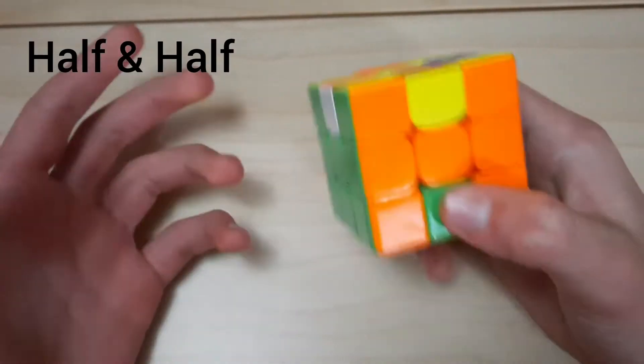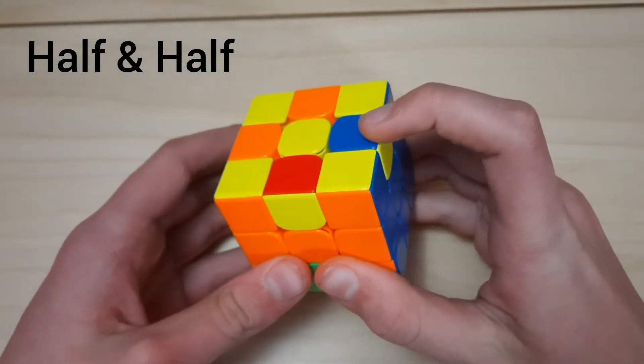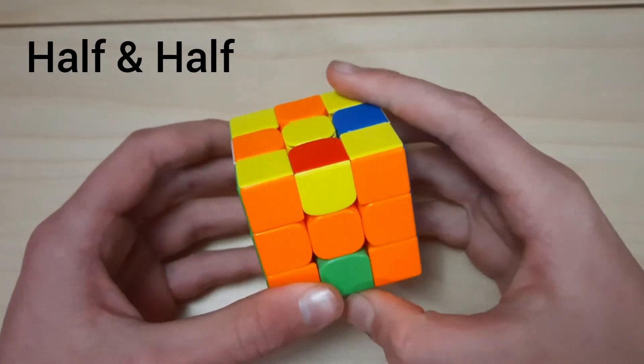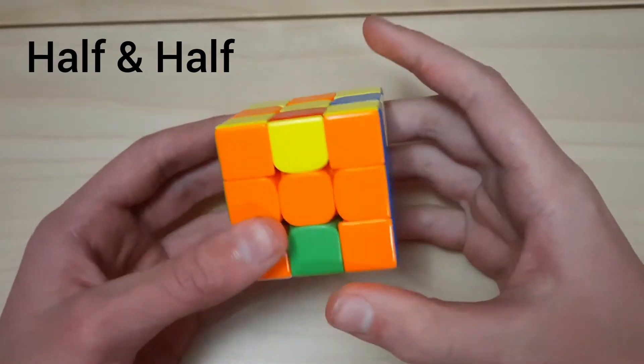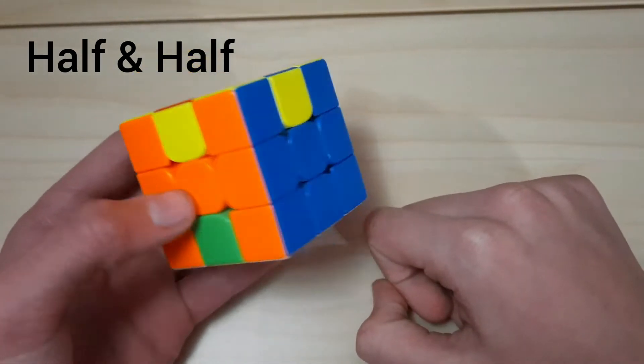Now we're on to the half-and-half cases, as I call them. We have one that is misoriented and the other that is oriented. There's only one case in this category, but usually there will be many. Because of the symmetry of this case, there's only one, where there's one misoriented in the top and one oriented in the bottom.